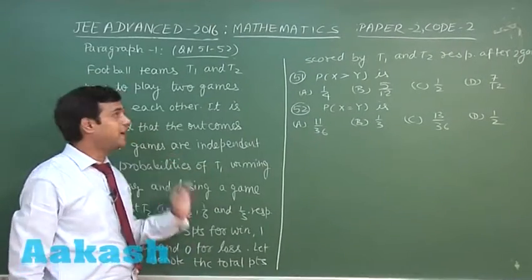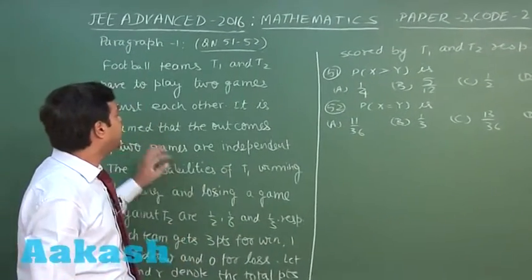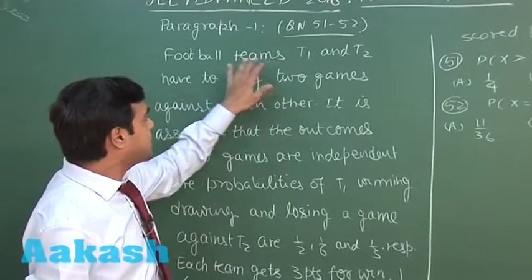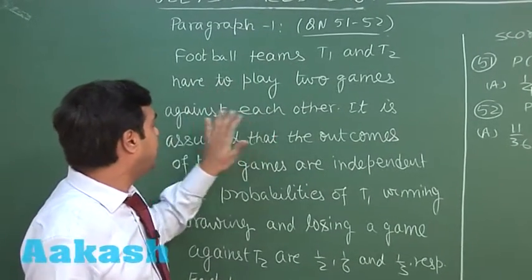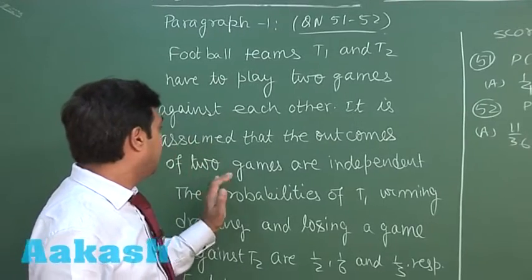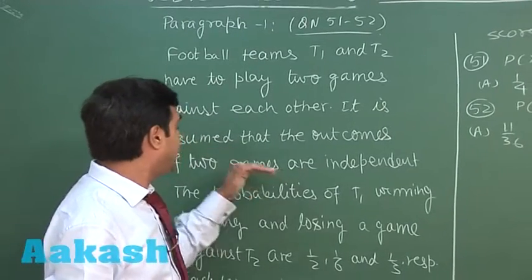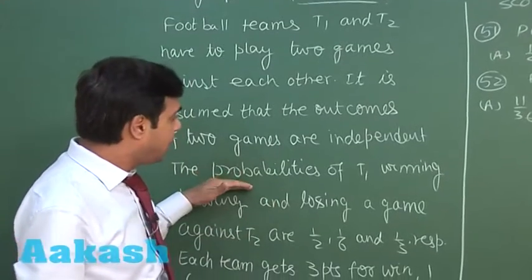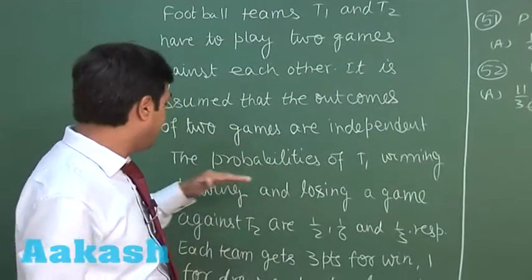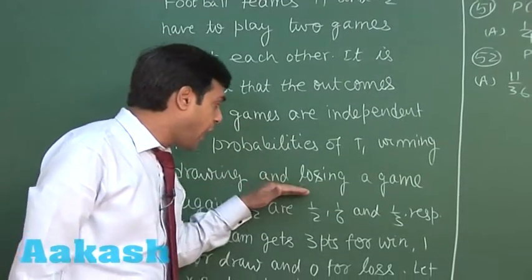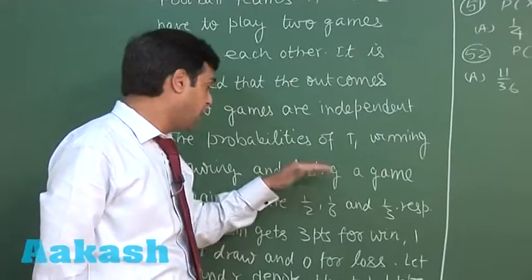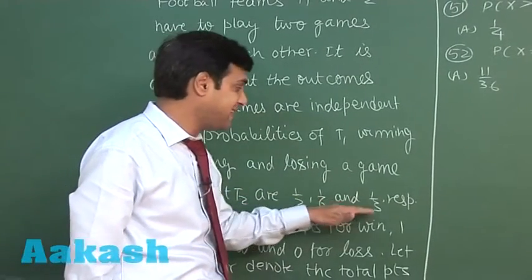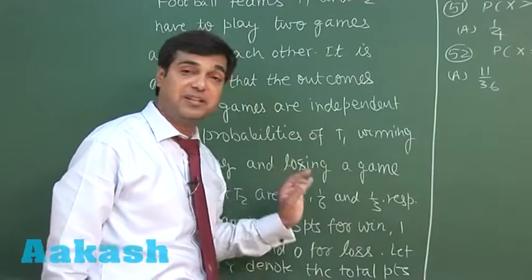Let's talk about the paragraph question number 51 to 52. Football teams T1 and T2 have to play two games against each other. It is assumed that the outcomes of the two games are independent. The probabilities of T1 winning, drawing, and losing a game against T2 are 1/2, 1/6, and 1/3 respectively.